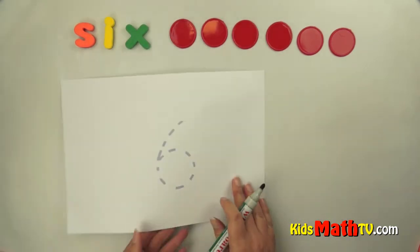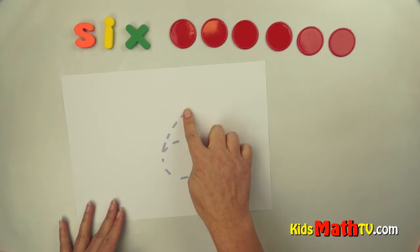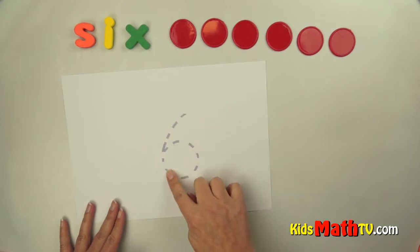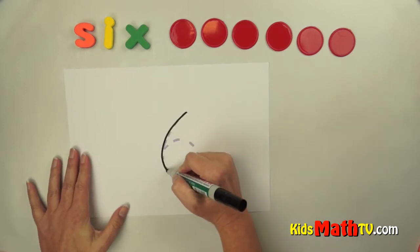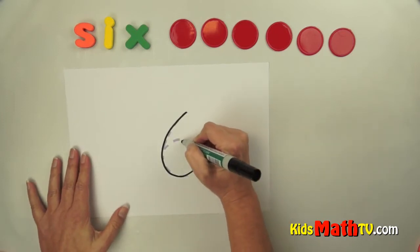Let's try without the numbers. Six. Go down and around, up and around. Write it. Down and around, up and around.